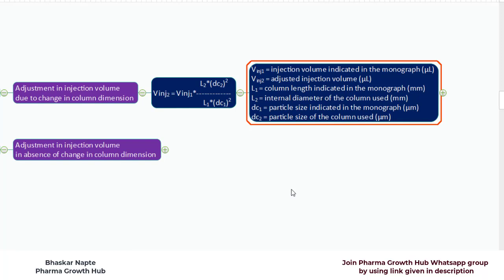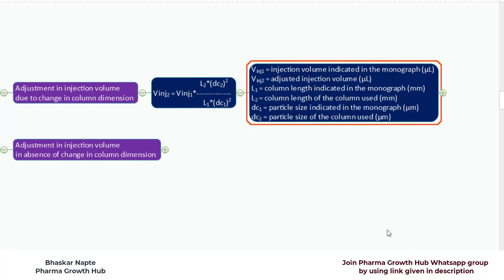V injection 1 stands for the injection volume indicated in the monograph method. V injection 2 stands for the adjusted injection volume. L1 stands for the length of the column indicated in the monograph. L2 stands for the column length of the column used — the column you have used with a different length. DC1 stands for the particle size indicated in the monograph, and DC2 stands for the particle size of the column used.